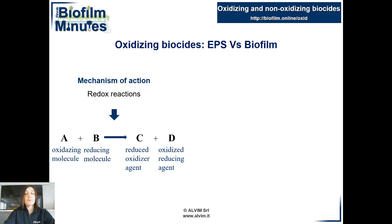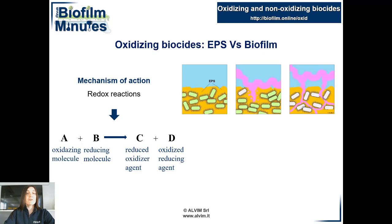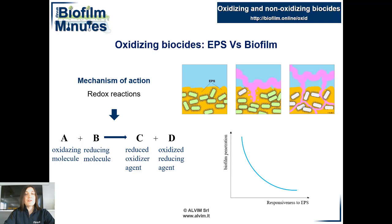The targeted organic molecules may be lipids, proteins, and fatty acids, thus undergoing an alteration of their structure and functionality. Some oxidizing biocides react primarily with the layer of EPS, while other biocides instead penetrate deeply, eliminating the bacteria that make up the biofilm. It can be said that reactivity towards EPS is inversely proportional to the penetration capacity into the biofilm.